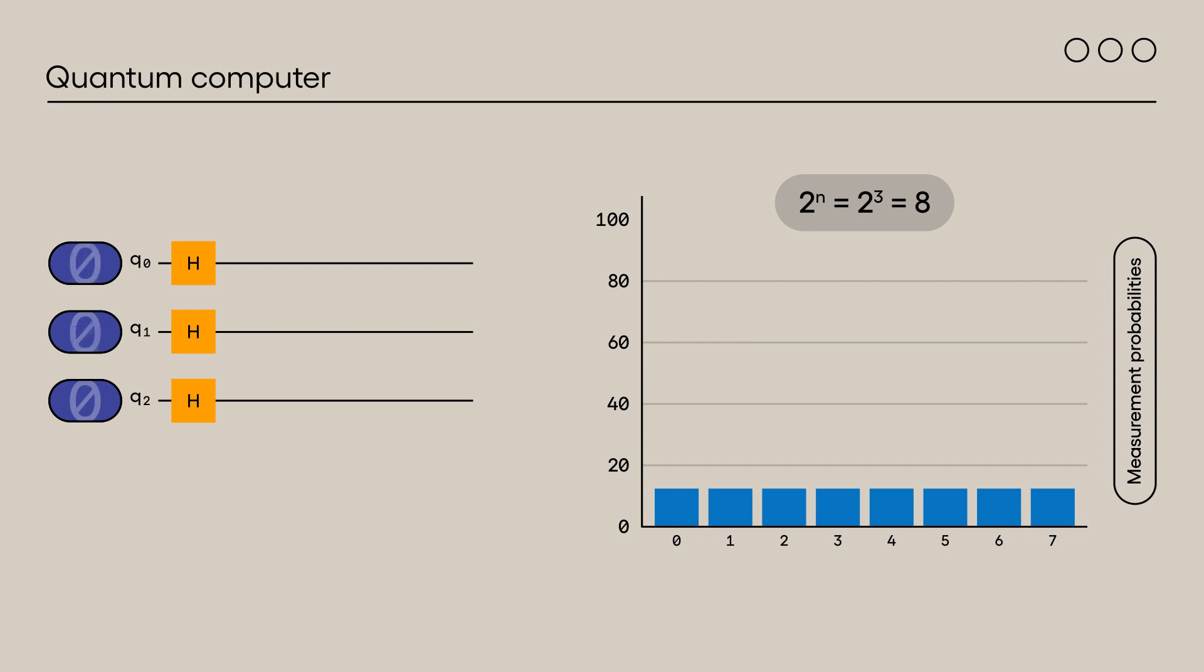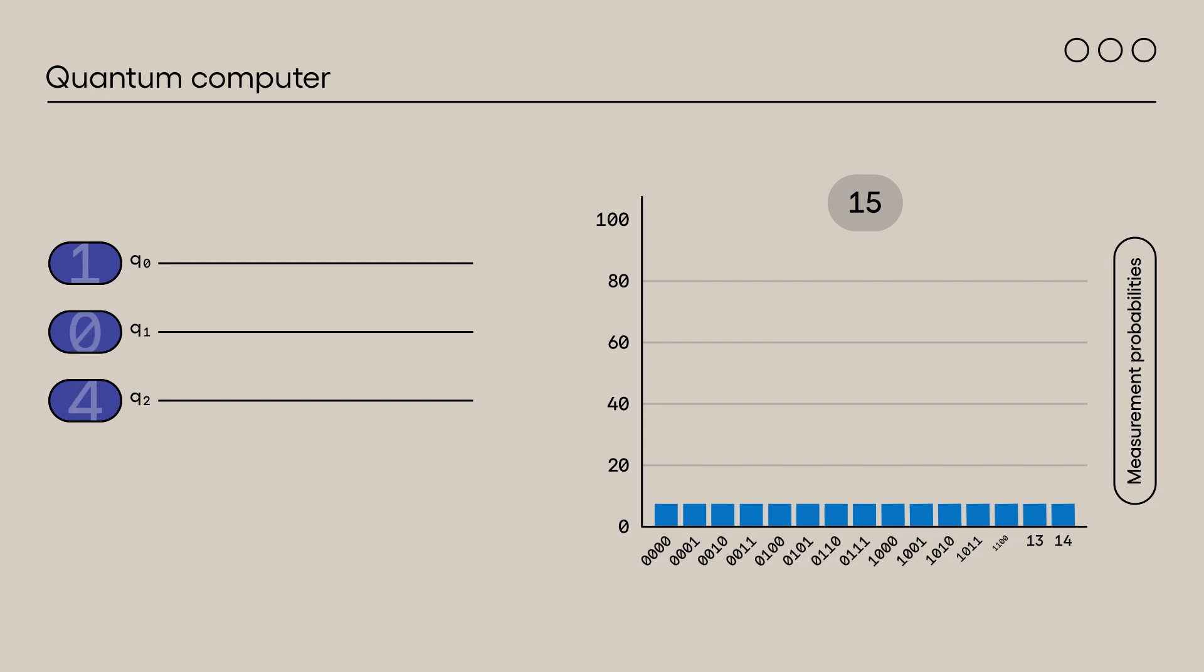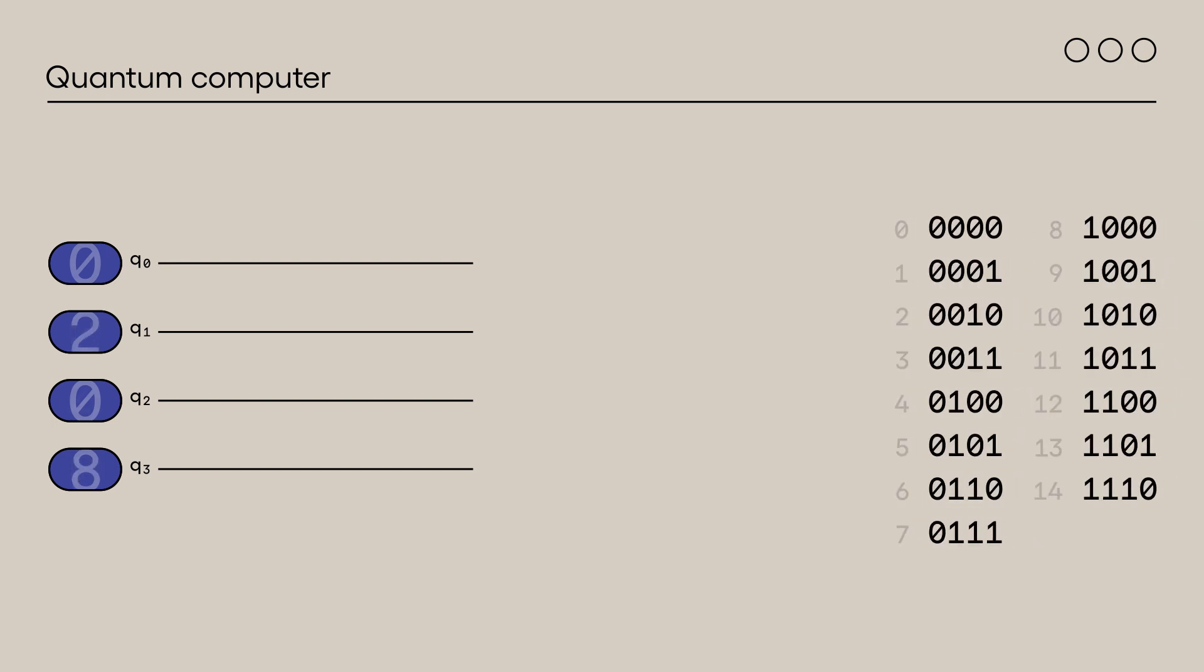For numbers that are not powers of 2, the situation is more complicated. Let's use the number 15 to illustrate this. We want to create a uniform distribution of probabilities for the numbers 0 to 14. Here is their binary equivalent. We'll need 4 qubits to write the numbers up to 14. Quick reminder, qubits and bits are noted from right to left.